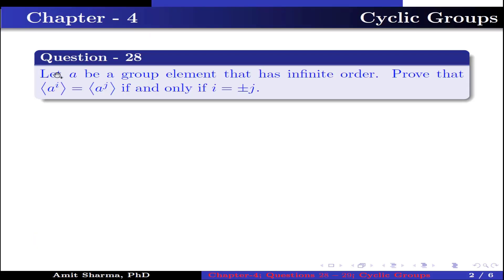Question number 28: let a be a group element that has infinite order. Prove that the group generated by a to the power i equals the group generated by a to the power j, if and only if i is equal to plus or minus j.